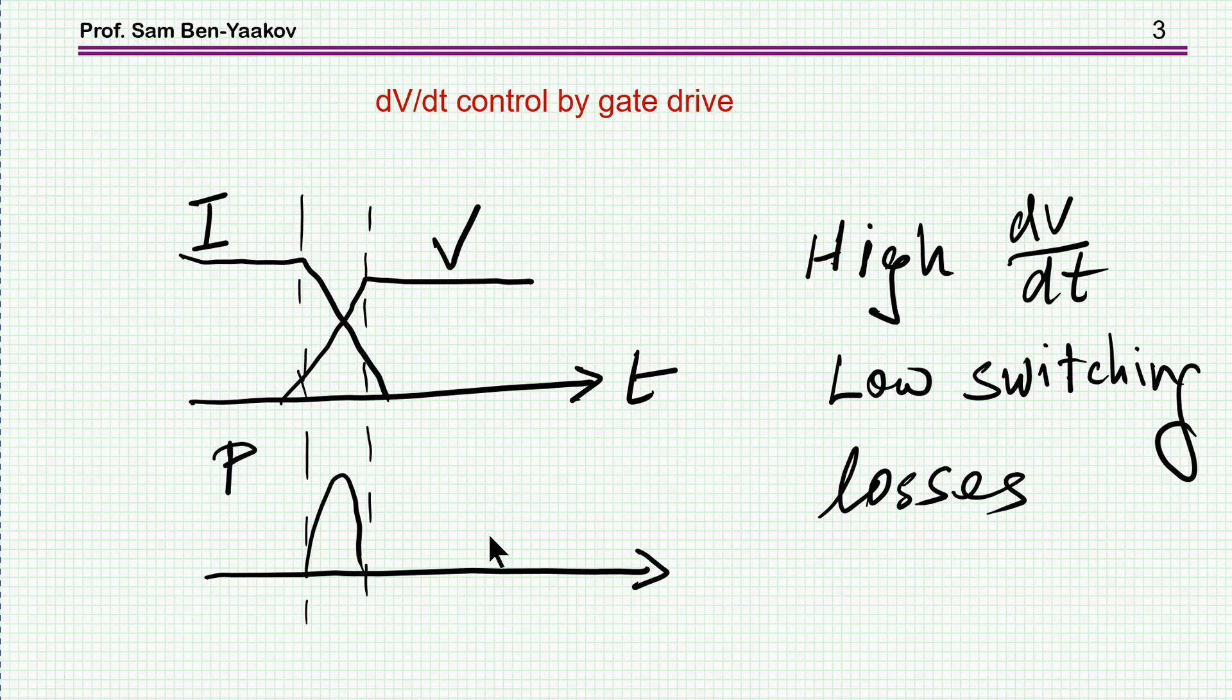If you use a GaN transistor and you slow it down, then what's the point? You choose it to begin with because it has a very fast transition, dV/dt, and therefore small switching losses.